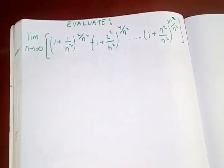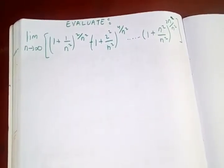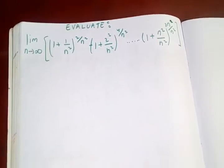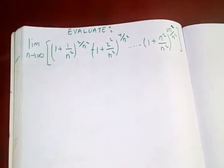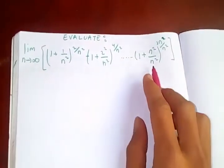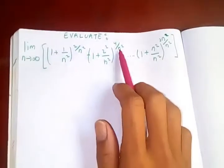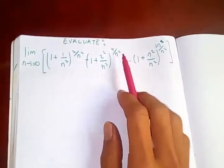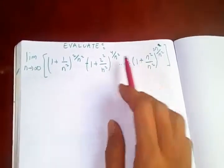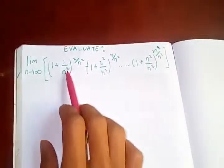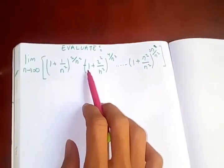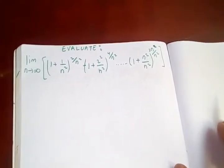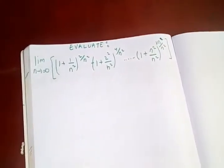Thanks for watching. Today we are going to evaluate this limit: as n tends to infinity, the product of (1 + 1/n²)^(2/n²) times (1 + 2²/n²)^(4/n²), and so on up to n times. So the general term appears to be (1 + k²/n²)^(2k/n²). When n tends to infinity, what will be the answer of this limit? Let's get started.